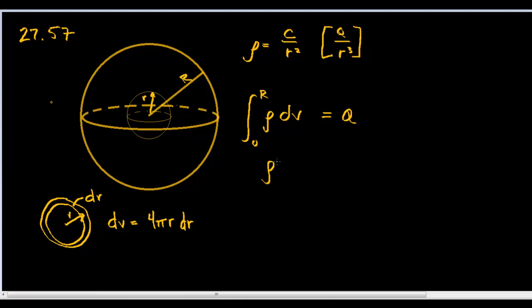And let's plug in for rho as well, which is c over r squared. dV will be 4 pi r dr, and we'll integrate from 0 to R. Oops, and I'm sorry, this is 4 pi r squared, right? That's the area of a sphere.